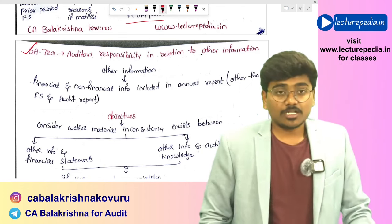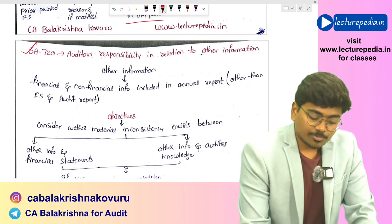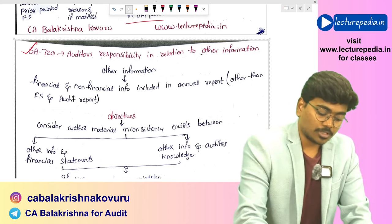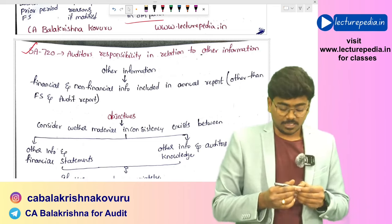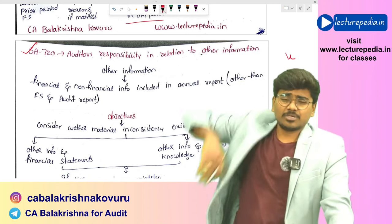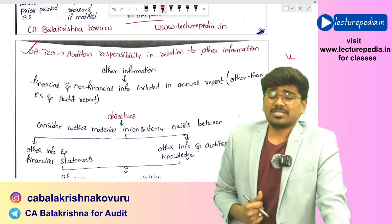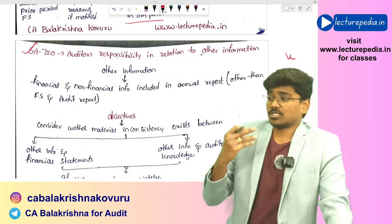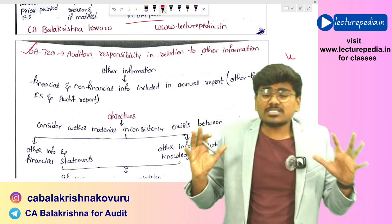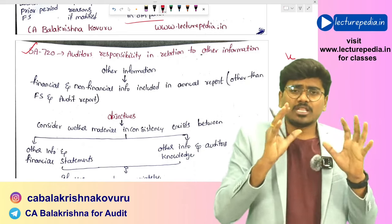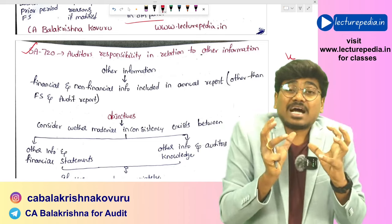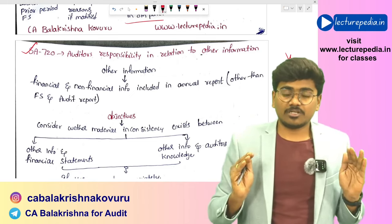SA 720 covers the auditor's responsibility with respect to other information. Other information refers to all information presented in the annual report except the financial statements and the audit report — including board reports, management reports, financial ratios, and other company information. The auditor must obtain this other information and verify whether there is any material inconsistency between it and the financial statements, or between it and the auditor's knowledge of the entity.